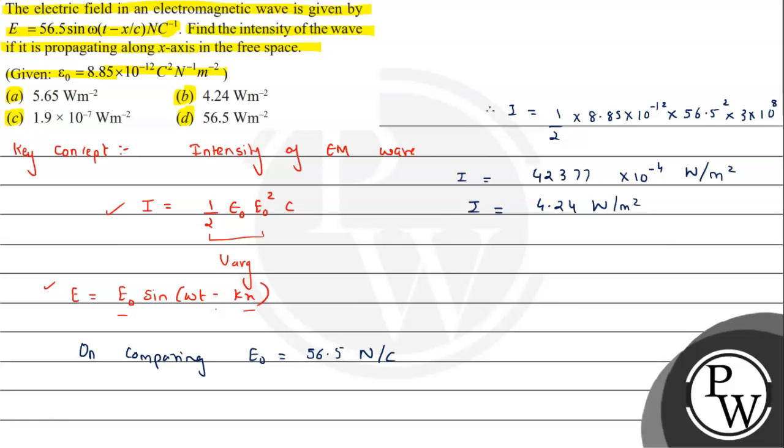So the answer is 4.24 watt per meter square. One might get confused about the unit, so we can see intensity is generally the energy passing per unit area per unit time, and energy upon time, the rate of energy transfer, is nothing but power. Power upon area: power is given in watts, area in meter square, so we get the unit as watt per meter square for intensity.